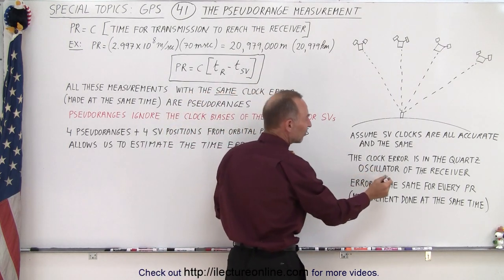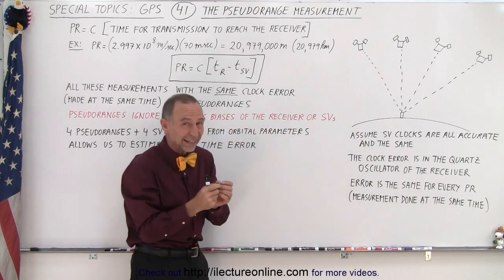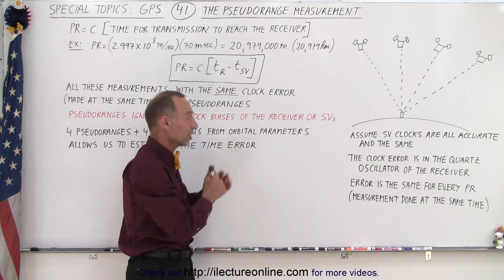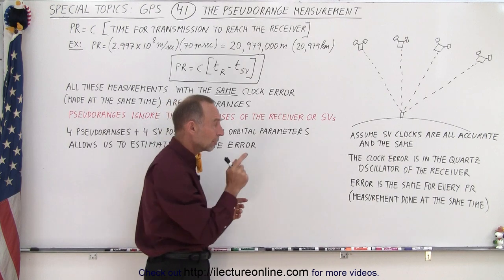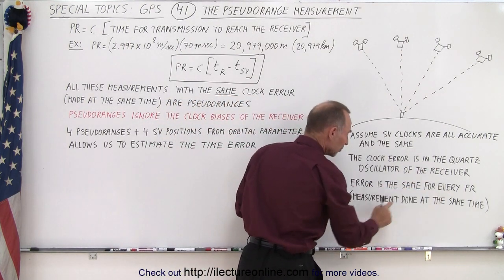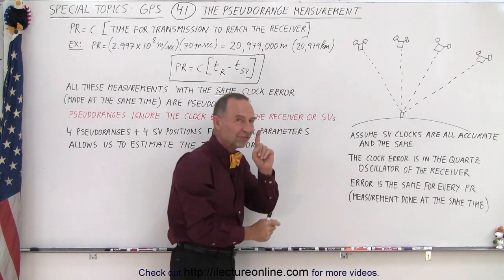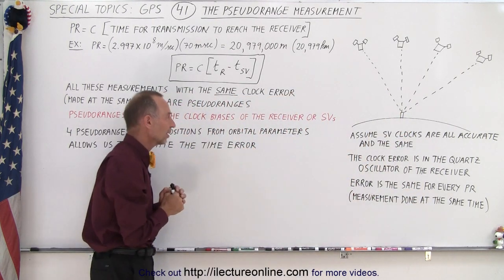So the clock error therefore is in the clock, in the quartz oscillator of the receiver, because that one is not nearly as accurate as the clocks in the satellites. But we can say that the error is therefore the same for every pseudorange measurement because they're done at the same time, because it's always the clock of the single receiver that has an error.